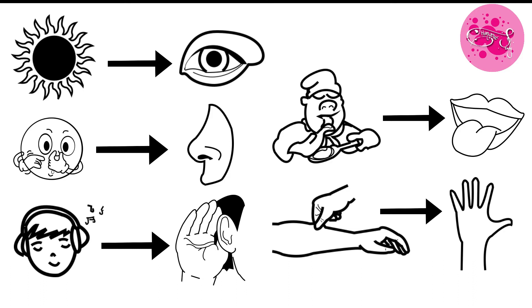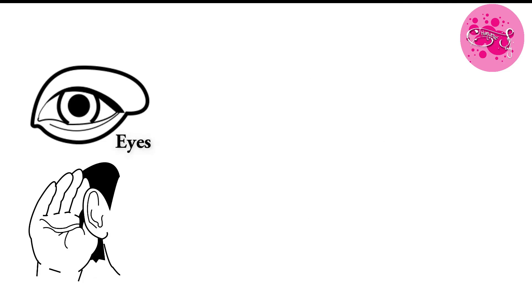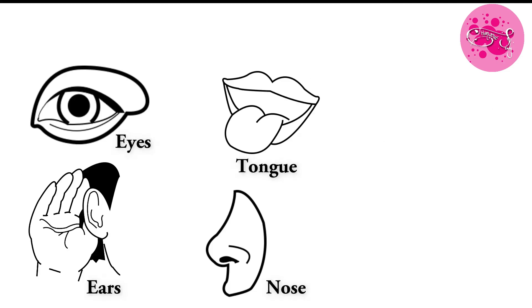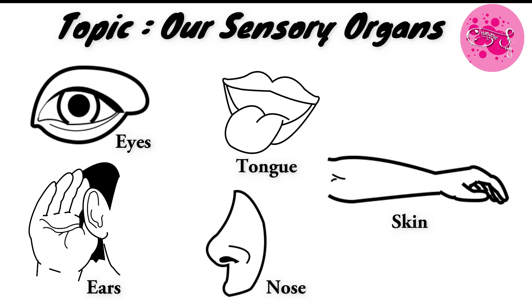Very good children. So children, today let us study about our eyes, ears, tongue, nose, and skin in our topic: Our Sensory Organs.